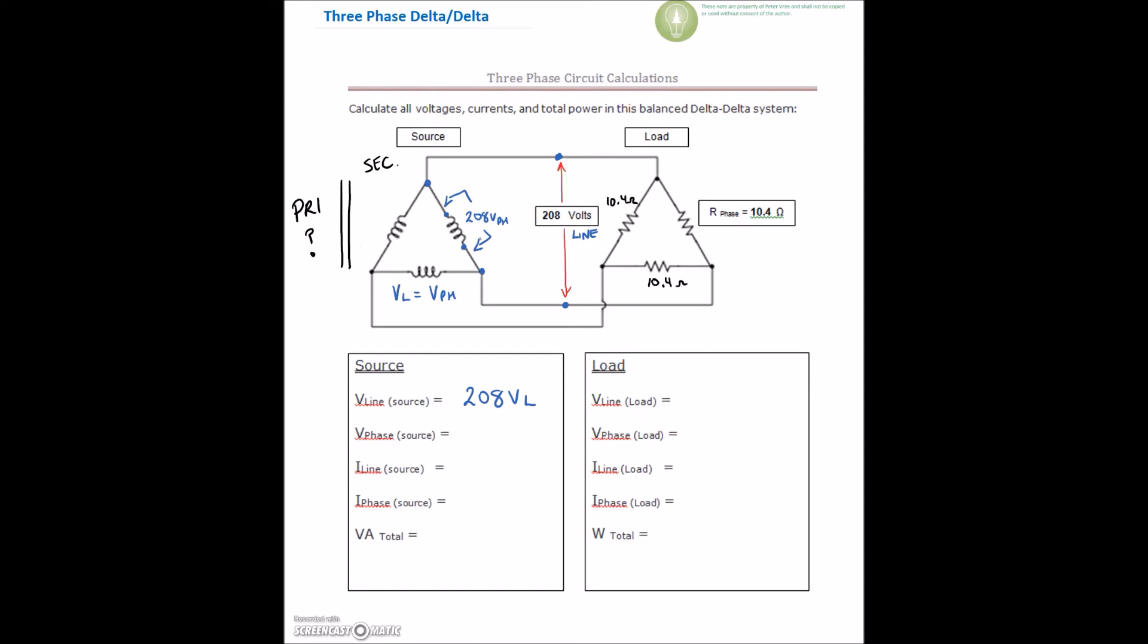If that voltage is 208, then this guy right here for our load is going to be 208 as well. They're a mirror image of each other. And that is going to be our phase voltage again. So these guys are a mirror image of each other. 208 volts line, 208 volts phase. These guys are exactly the same.